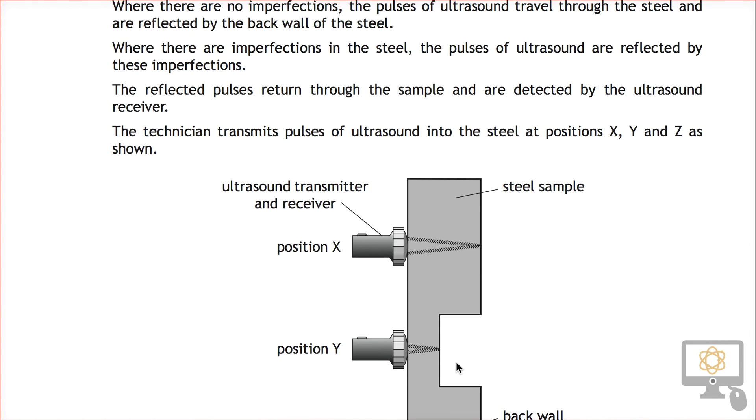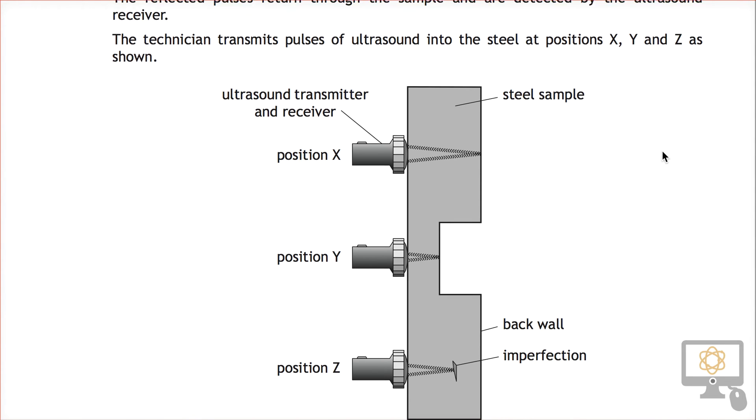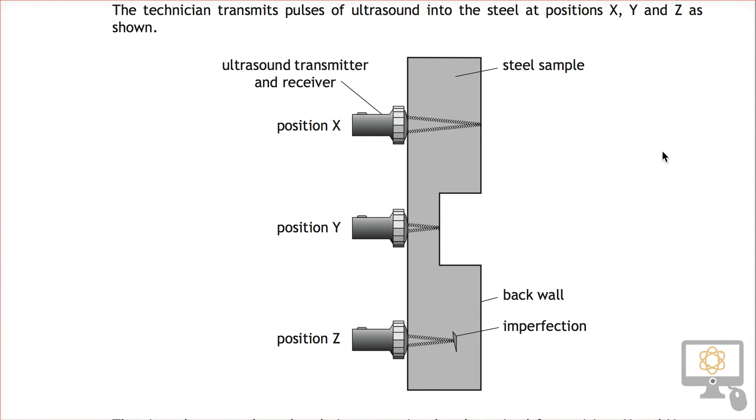The reflected pulses return through the sample and are detected by the receiver. It's a transmitter and a receiver. The technician transmits the pulses of ultrasound into the steel at positions X, Y, and Z as shown.